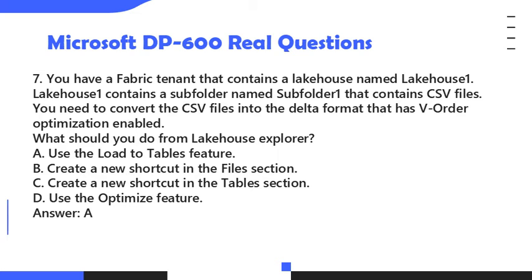Question 7. You have a Fabric tenant that contains a lakehouse named Lakehouse 1. Lakehouse 1 contains a subfolder named Subfolder 1 that contains CSV files. You need to convert the CSV files into the delta format that has V-order optimization enabled. What should you do from Lakehouse Explorer? A. Use the Load to Tables feature. B. Create a new shortcut in the Files section. C. Create a new shortcut in the Tables section. D. Use the Optimize feature. Answer: A.